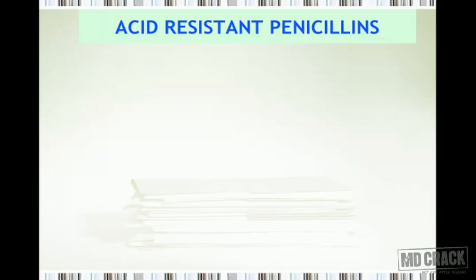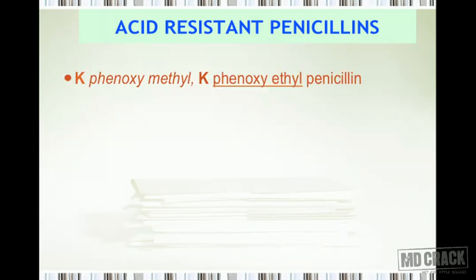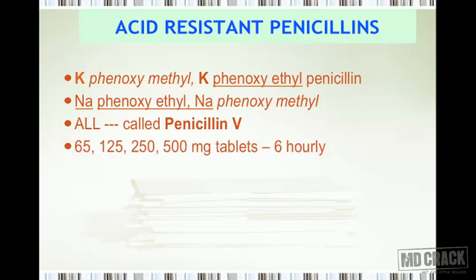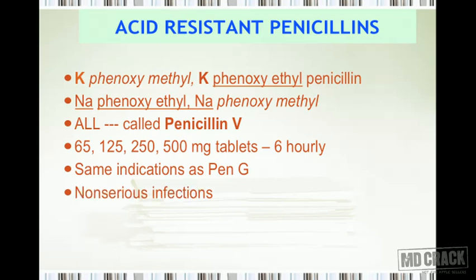The acid-resistant penicillins are the potassium phenoxymethyl or phenoxyethyl and sodium phenoxyethyl or phenoxymethyl salts of penicillin G — together called penicillin V. They were very popular when introduced because for the first time a penicillin could be used by oral route. Tablet strengths are 65 mg, 125 mg, 250 mg, and 500 mg, given every six hours. Indications are the same as penicillin G, but these drugs are generally preferred for non-serious infections.